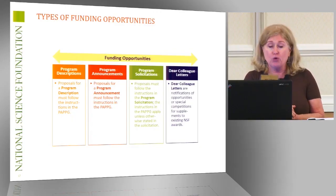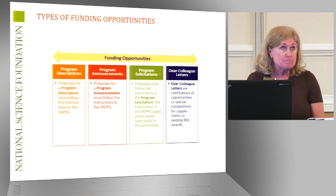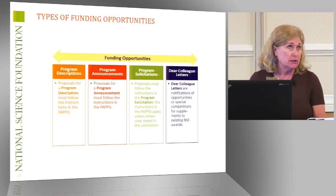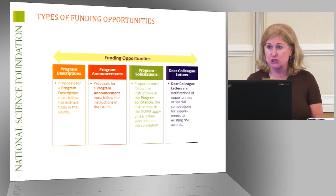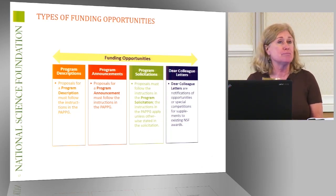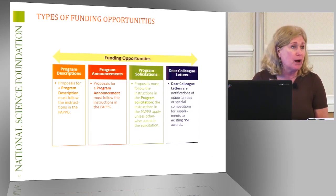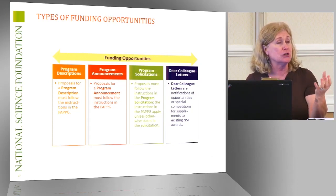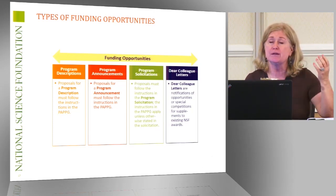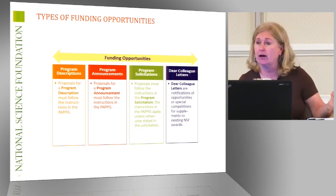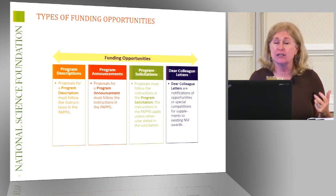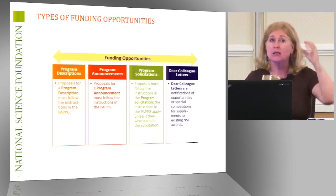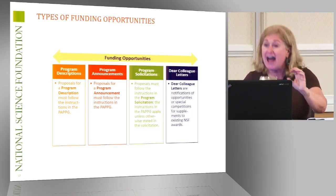We have program descriptions on our websites. These program descriptions are about as brief as you can get in terms of the kinds of information they contain. NSF has a program in cultural anthropology. This is the kind of area of science cultural anthropology falls into. You may submit your proposal at any time or by this target date. But that's all it basically is — basic information about the type of science.